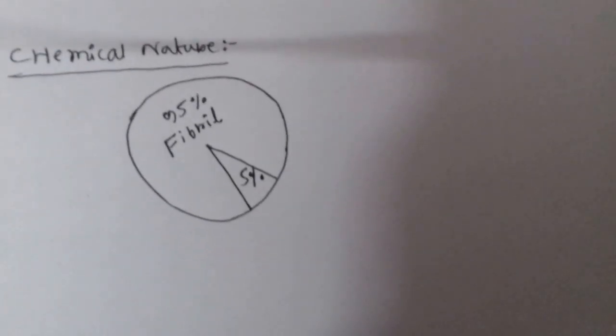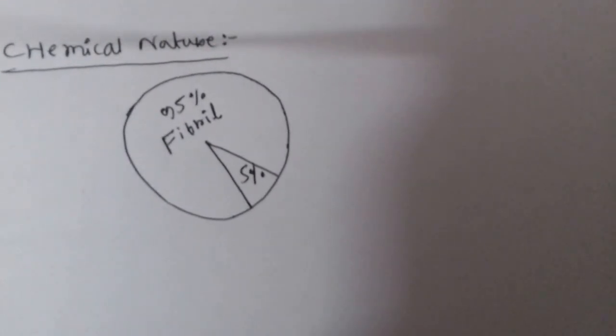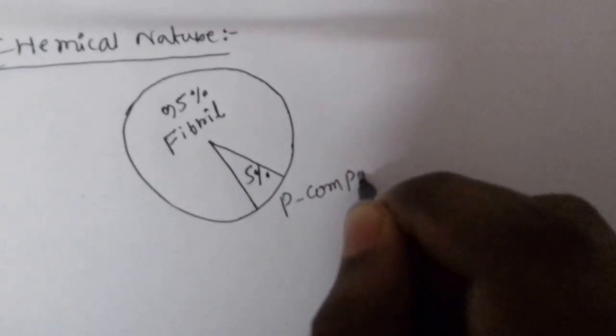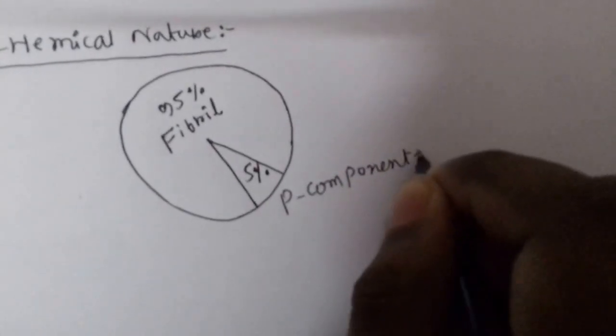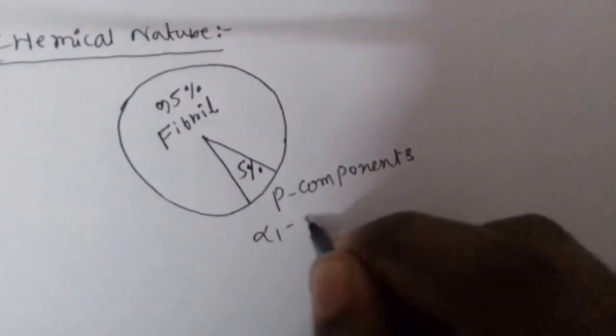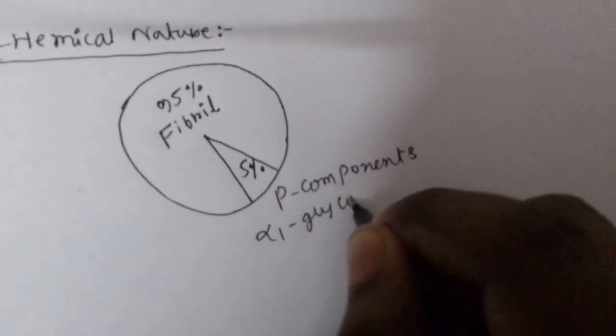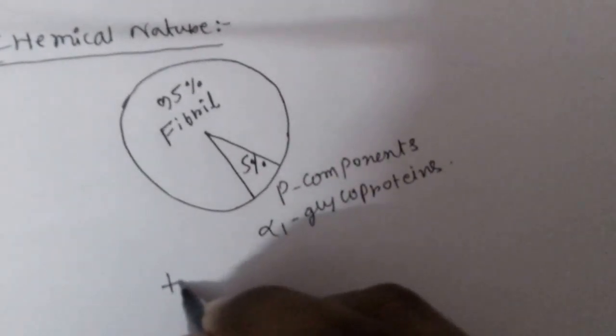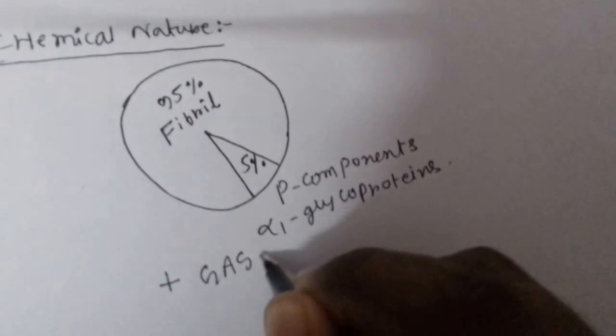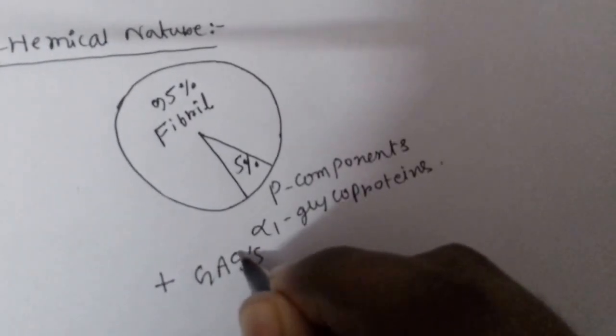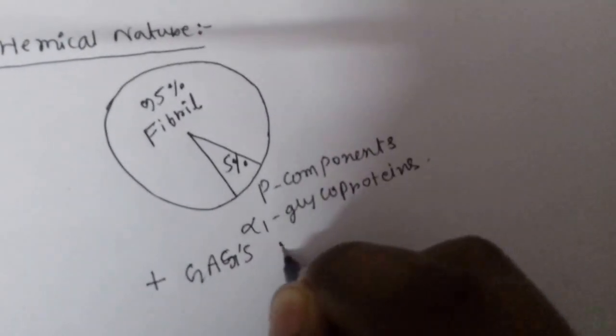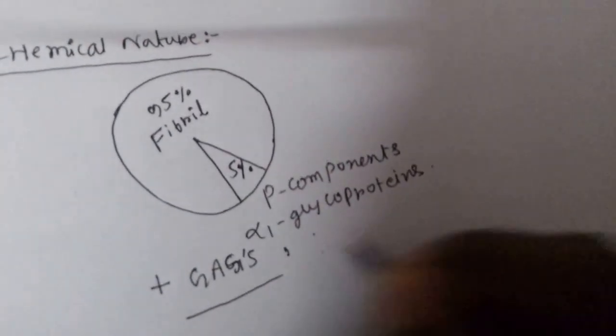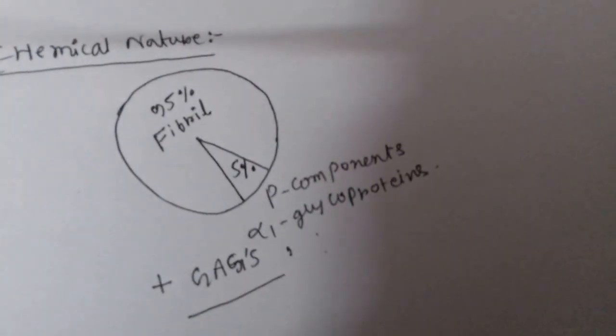Chemically they are 95% fibril protein and 5% P component. These P components are alpha-1 glycoproteins and also they have some minor components including glycosaminoglycans and proteoglycans. This is the chemical nature.